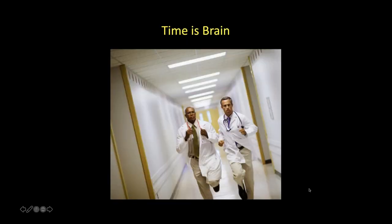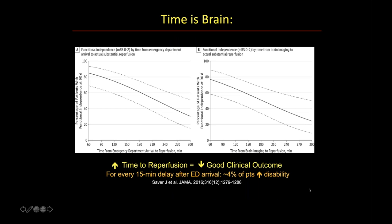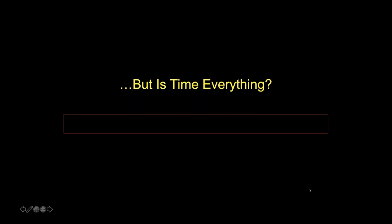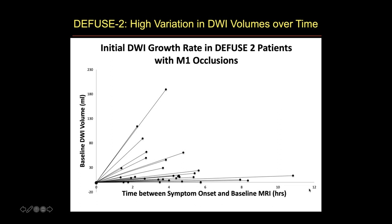We had always functioned under the premise that 'time is brain' — when vessels are occluded, you want to be as close to symptom onset as possible. But we began to wonder: is time really everything? Should we put a hard stop at six hours from symptom onset? Looking at the DEFUSE-2 trial, which examined how people grow their infarcts over time on MRI, we found high variability in how long it takes someone to complete an infarct in the MCA territory.